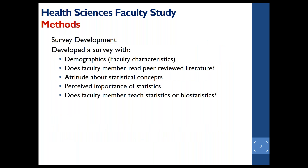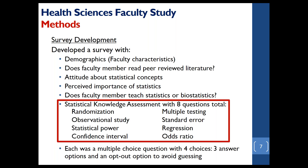The survey we developed used the Qualtrics online survey platform. We included questions about faculty characteristics such as sex, highest degree, years of experience as a faculty member, and a few other questions. We also had questions about their attitude toward statistical concepts, their perception of how important statistics was, and whether they taught statistics or biostatistics. The knowledge assessment included eight questions focused on areas such as randomization, observational studies, statistical power, and related themes — the main topics we noticed in studies looking at which methods were used in these literatures.